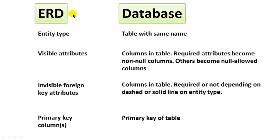Some of the concepts for converting to a database: in an ERD we have entity types. Simply converting it into a database, we would create a table with the same name as the entity type. So if you have an entity type called student, you will have a database table called student. The visible attributes of the entity type become columns in the table. The invisible foreign key attributes also become columns in the table. Whether they are required or optional depends upon the cardinality — the solid line or dash line determines that. And the primary key of the ERD becomes the primary key of the equivalent table. So the mapping from ERD to database is extremely straightforward.